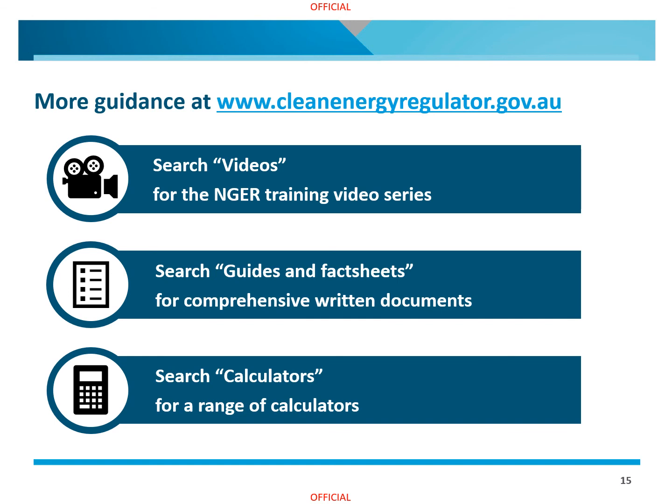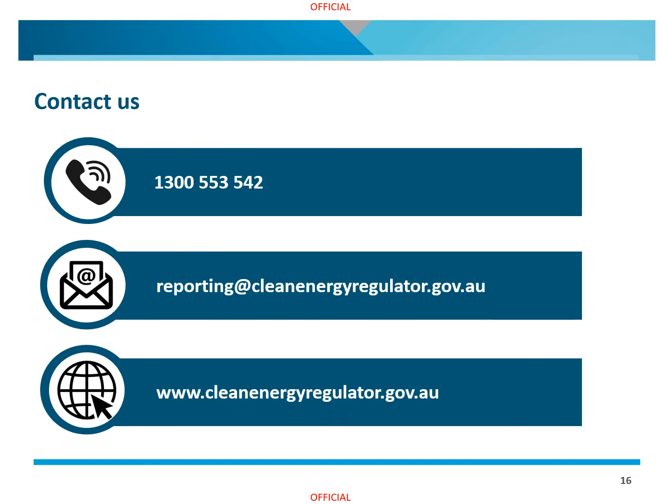For more information or help with reporting under the NGER scheme, please contact us by calling 1300 553 542, emailing us at reporting@cleanenergyregulator.gov.au, or visiting our website at www.cleanenergyregulator.gov.au.